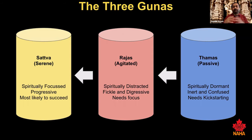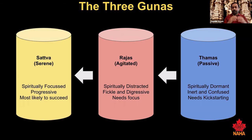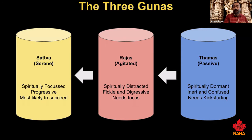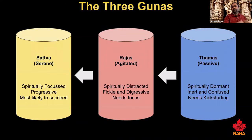Through abhyasa and vairagya — training and discipline — rajas can move toward sattva, and from there toward moksha. Tamas, or passivity, is like spiritual dormancy — inertness, confusion, and lack of inclination toward spiritual progress. Everyone who is tamasic has the potential for spiritual liberation. The path is: tamas gets kick-started into rajas, then spiritual focus and discipline move it into sattva, maturity sets in, and liberation follows.